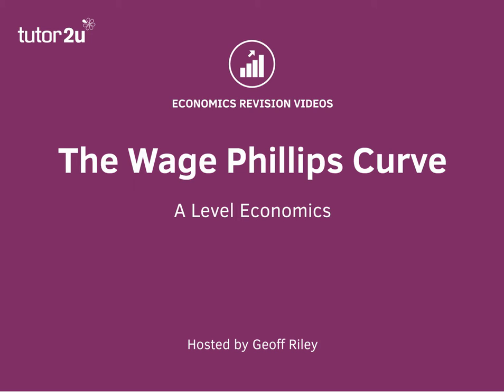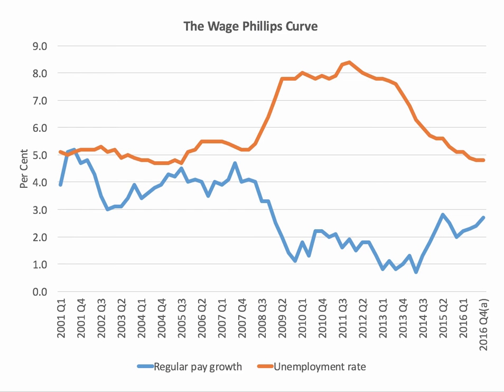The Phillips curve of course suggests that once unemployment falls below a certain level we tend to see an acceleration in wage and then price inflation. But here's the data for the UK. Basically this chart shows in orange the unemployment rate as a percentage of the labour force, and the blue chart shows the annual growth of regular pay. Regular pay excludes bonuses — it's essentially basic pay plus overtime. The chart suggests that in recent times wage growth in the labour market has been weak relative to what the unemployment rate is.